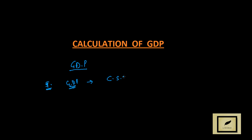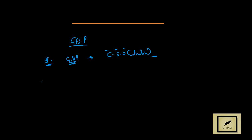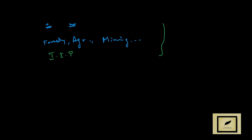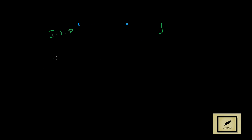For example, we have CSO, that is the Central Statistics Office in India, which calculates the GDP after compiling data from several organizations and departments like the Forestry Department, the Agriculture Department, the Mining or Fishing Department, and so on. They also use several indexes like the IIP, the Index of Industrial Production. Such information is collected and compiled to know the GDP of the country.